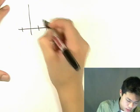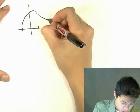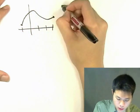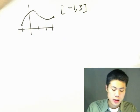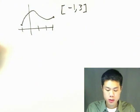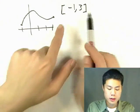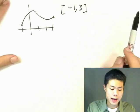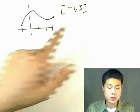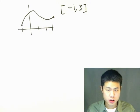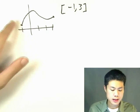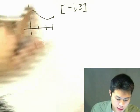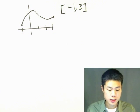Let me give you a graph here. If I were to ask you what's the absolute max and min on the closed interval negative one to three — closed brackets mean the endpoints are included in the domain, so negative one and three are included. We're allowed to say that x equals negative one is the function's absolute minimum, and roughly x equals one is the function's absolute maximum.